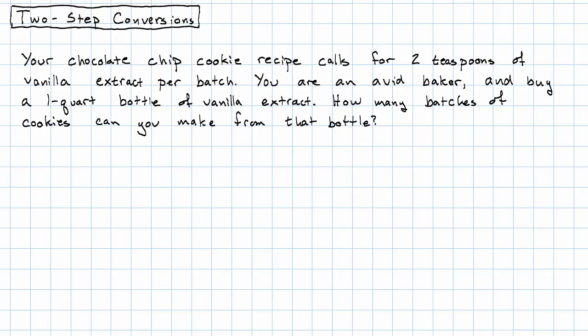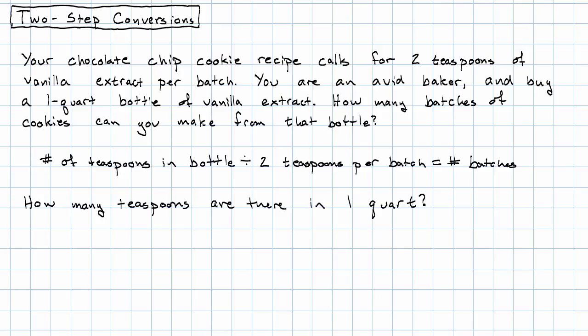Now, you know that this is a job for division, right? You know that you want to take the number of teaspoons in the bottle divided by two teaspoons per batch to get the number of batches. So you just need to say, how many teaspoons are there in one quart?